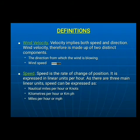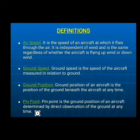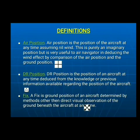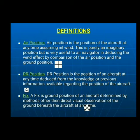Wind velocity: wind speed along a specific direction. Speed: rate of change of position, expressed as nautical miles per hour or knots, kilometers per hour, or miles per hour. Airspeed: the speed of an aircraft flying through the air, regardless of wind speed. Ground speed: speed in relation to the ground. Ground position: the point on the ground beneath the aircraft. Pinpoint: ground position of the aircraft determined by observation. Air position: position of an aircraft in air assuming no wind. Dead reckoning position: the position deduced from previously gathered information. Fix: ground position determined by methods other than dead reckoning.